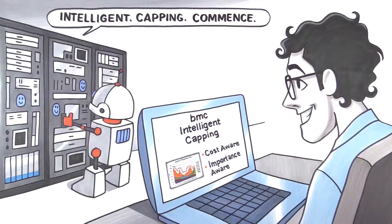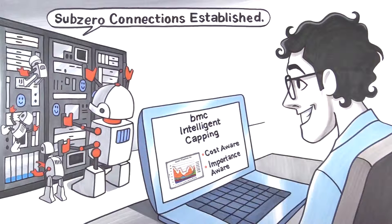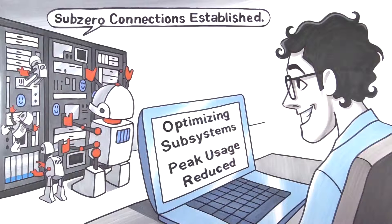And with Subsystem Optimizer, you can even change the MLC map by moving or isolating MLC subsystems to reduce peak usage, increase availability, and drastically lower MLC costs.